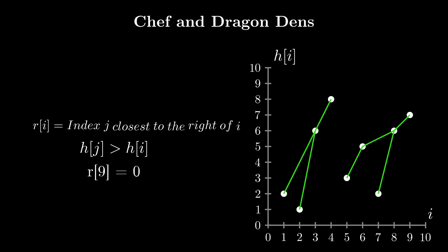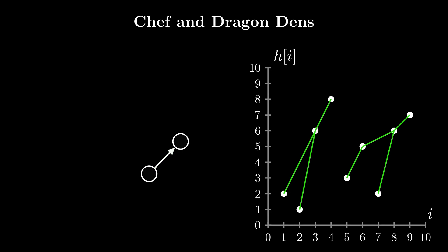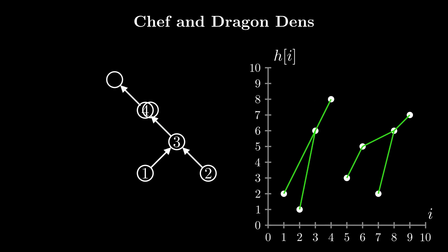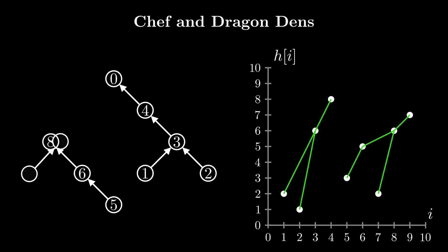We know that we can travel from R[i] to i, so let's look at this backwards. We can convert this into a directed tree with all edges pointing towards the root, meaning we have directed edges from node i to node R[i]. This tree has n edges with node 0 as the root. For a journey from i to j to be valid, i has to be an ancestor of j, meaning there exists a directed path from j to i. This also maximizes the value we find as we visit the maximum number of possible points by repeatedly visiting R[i]s.